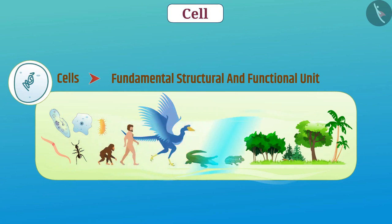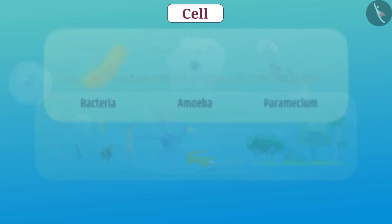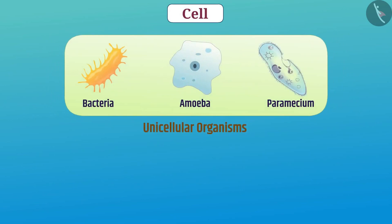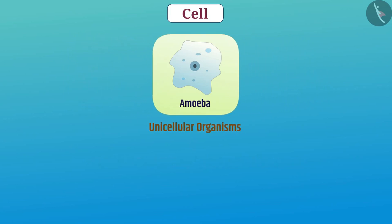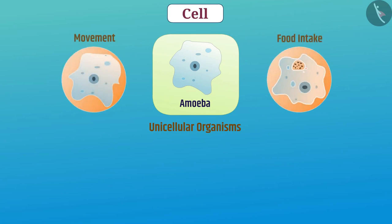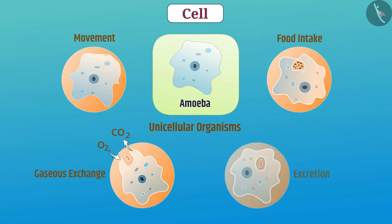In different organisms, there are different numbers of cells. In some organisms, one cell is itself the entire organism. Organisms whose body is made up of a single cell are called unicellular organisms. In such organisms, the single cell carries out all fundamental functions like movement, food intake, gaseous exchange and excretion.